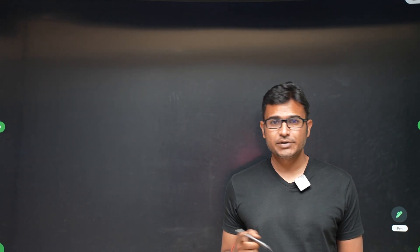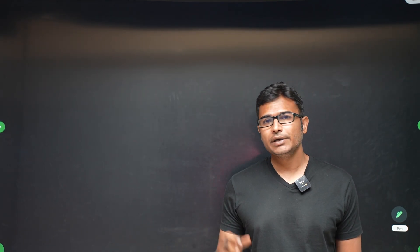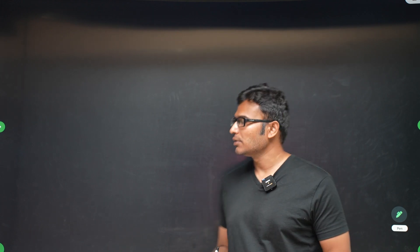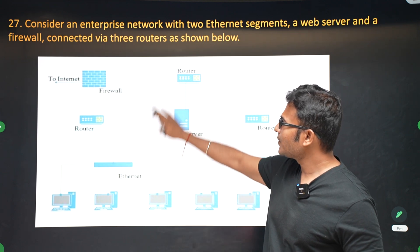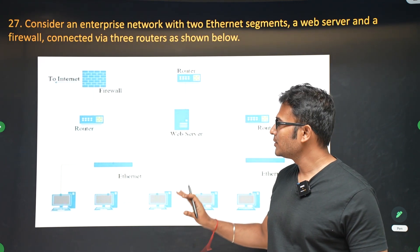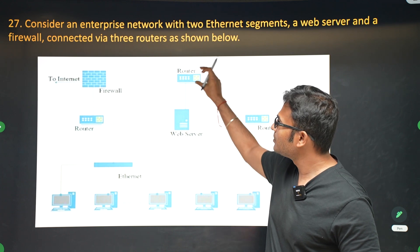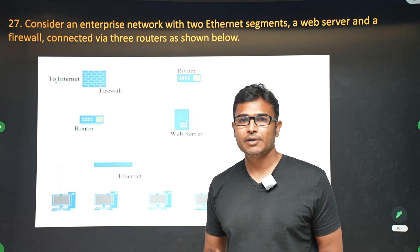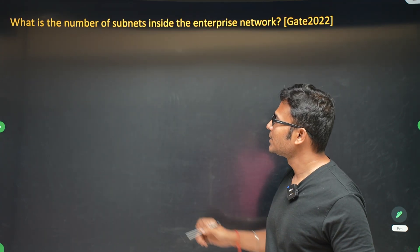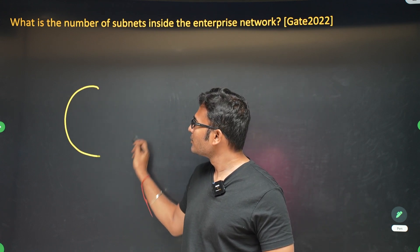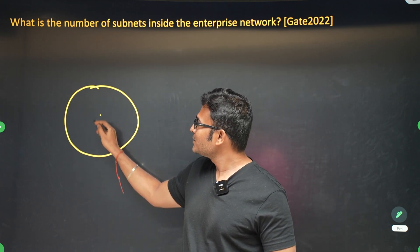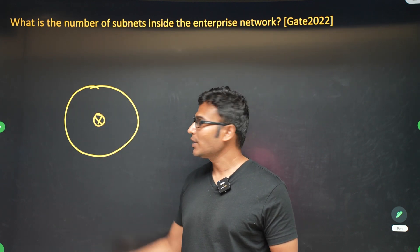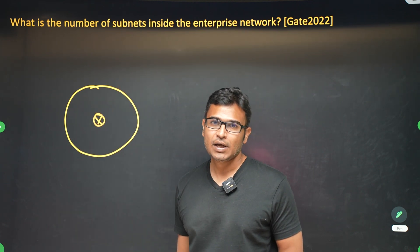There is a GATE question from last year about routers. I have already taught this concept in classes, so if we apply that concept we are going to get the answer. The question involves a given network and asks how many subnets are formed because of the placement of the router. If you place a router inside a network, you can divide it into multiple parts.